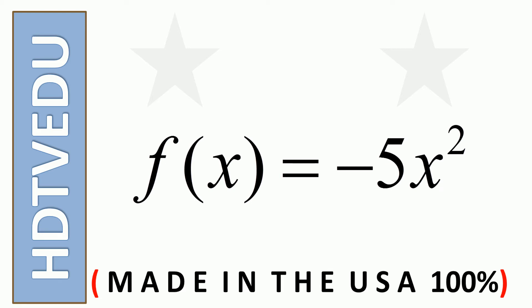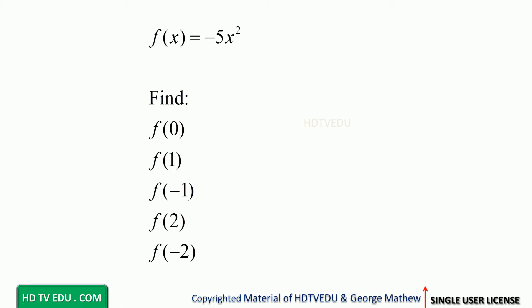f of x equals negative 5 x squared — it is negative 5 times x to the power of 2. We are asked to find f of 0, f of 1, f of negative 1, f of 2, and f of negative 2.